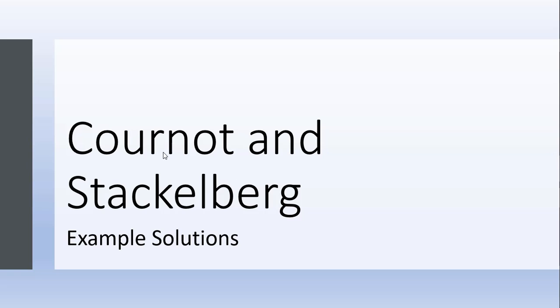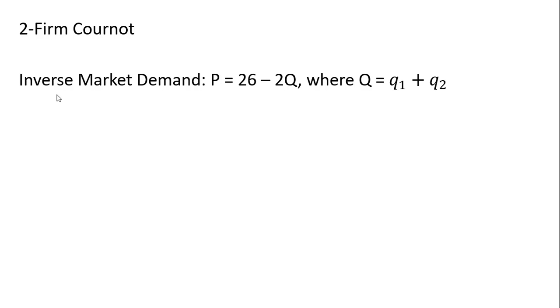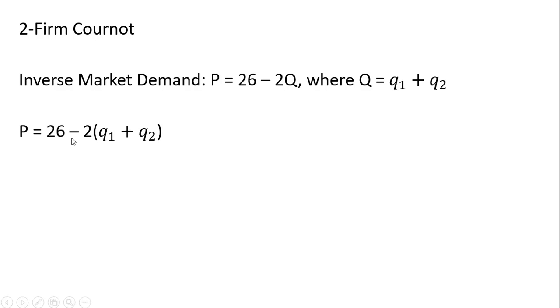In this video we're going to solve for the Cournot and Stackelberg equilibrium. We'll start with the two-firm Cournot. The inverse market demand is given as follows. P is the market price and Q is the market quantity, where the market quantity is split between firm 1 and firm 2. If we substitute in for Q, we'll put in Q₁ plus Q₂ to get this result.